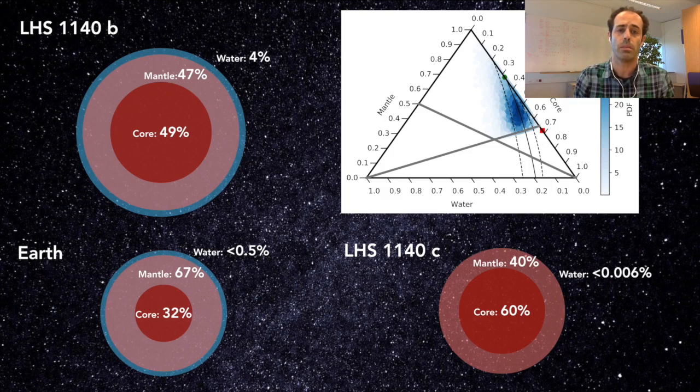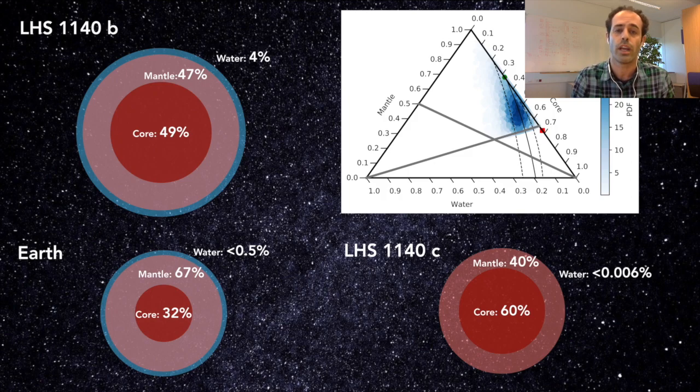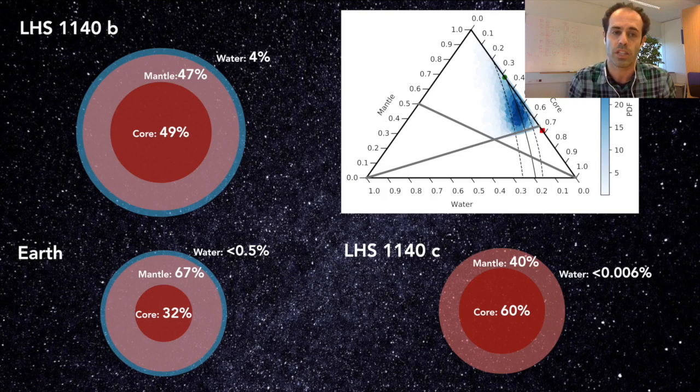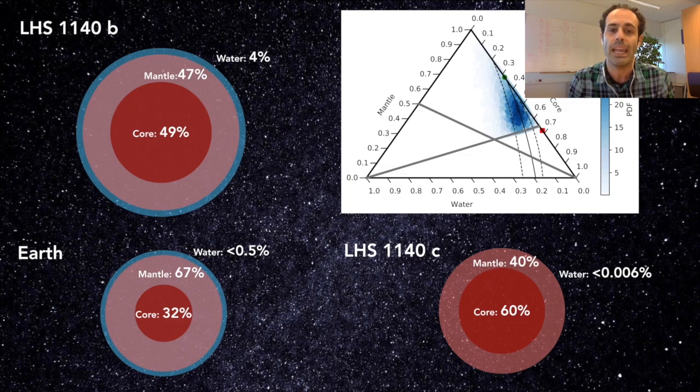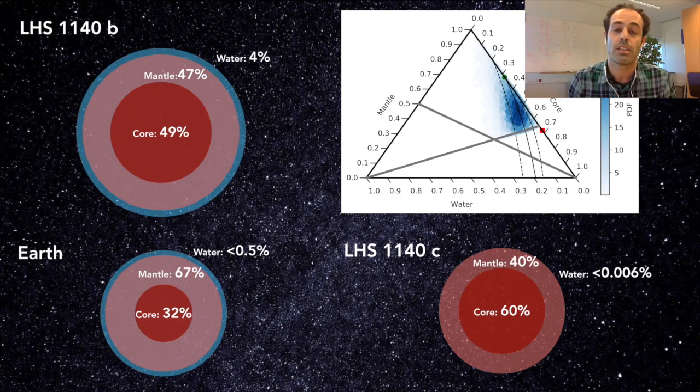We found LHS 1140b is basically half core and half mantle with a large water fraction of 4%. This implies LHS 1140b has between 5 and 8 times more water than earth. Hence is this planet a water world in another planetary system? The evidence that we have now says so.